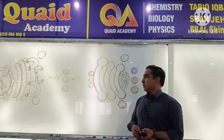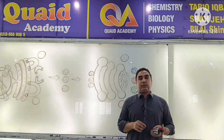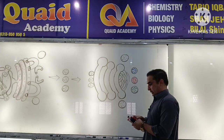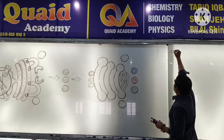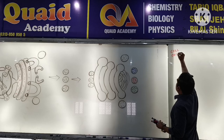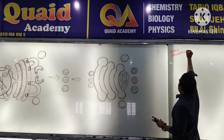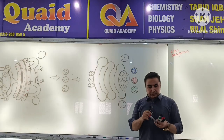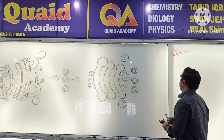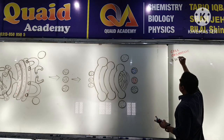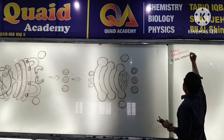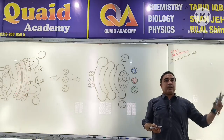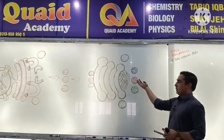Chapter number one: cell structure and function. Topic: cell organelles, third MCQ. The cell organelle — the cellular body is dealing with the cell.